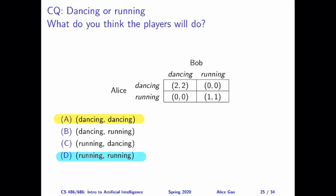By stable here, I mean that if Alice sticks to dancing, then Bob does not want to go running instead. And similarly, if Bob sticks to running, then Alice does not want to go dancing instead. Because deviating in that way will cause either player to get a lower utility.